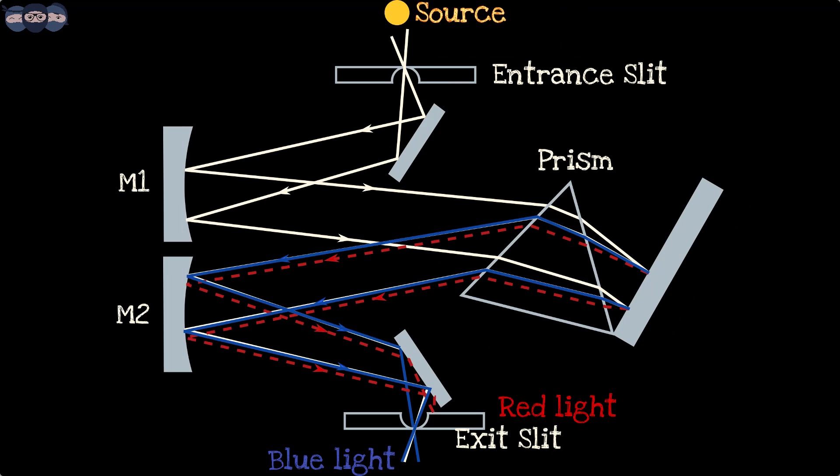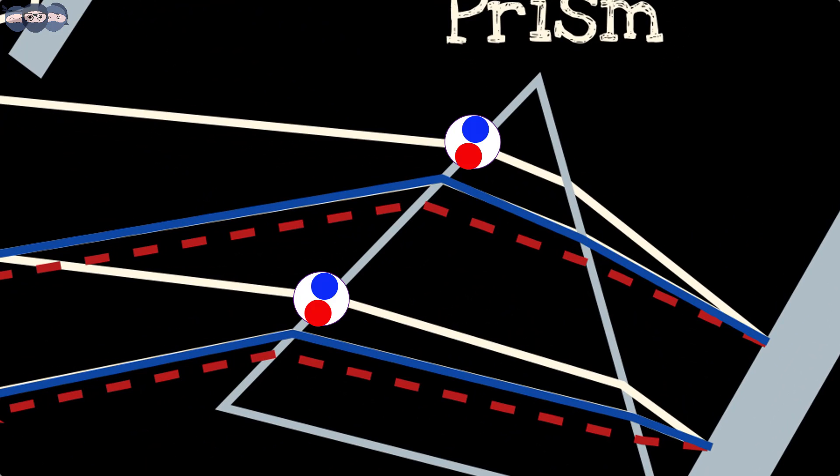Looking at prism monochromator, we can understand its working. Light from the source enters the monochromator through the input slit. This light is focused on a collimating mirror which renders the light beam parallel. This light is composed of different wavelengths.